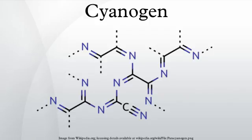Preparation: Cyanogen is typically generated from cyanide compounds. One laboratory method entails thermal decomposition of mercuric cyanide: 2Hg(CN)2 → 2HgCN2 + Hg2(CN)2.